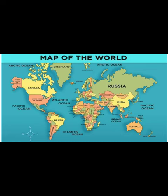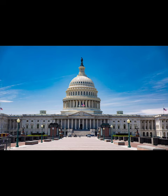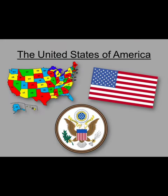The national flag of the USA has 13 stripes and 50 white stars on a blue background. The capital city of the USA is called Washington DC. The USA is a federal republic consisting of 50 states and one federal district. What are the top tourist attractions of the USA?